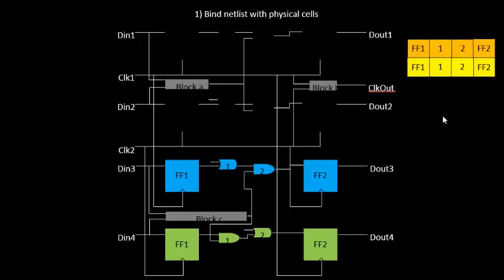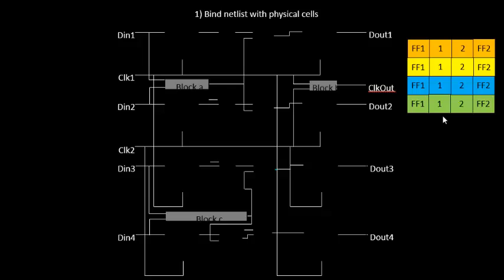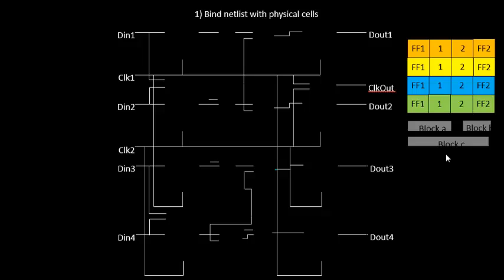Similarly, the blue logic and the green logic are also taken out and given physical dimensions. In this case, the complete circuit has been bound with physical cells. Block A, Block B, and Block C are also included. This set of physical cells is what we call a library.